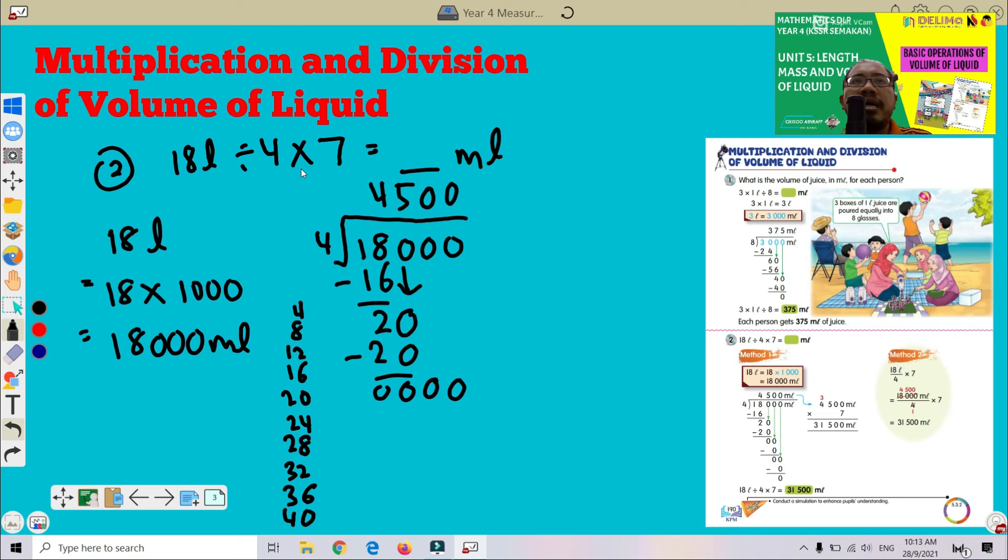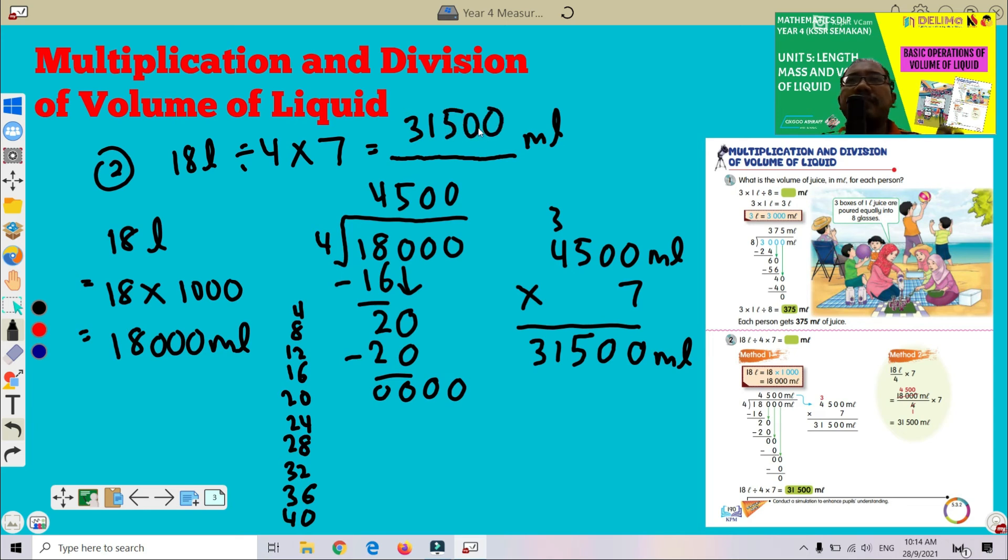But we have to perform multiplication here, multiply by 7. Now 4,500 milliliter, we multiply by 7. Now 0 times 7, we got 0, this one also 0, 5 times 7, we got 35, 4 times 7, we got 28, last one we got 31. The answer is 31,500 milliliter.